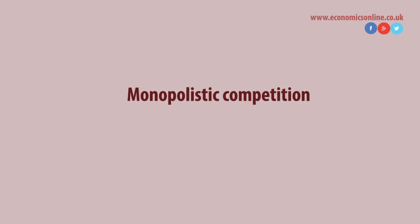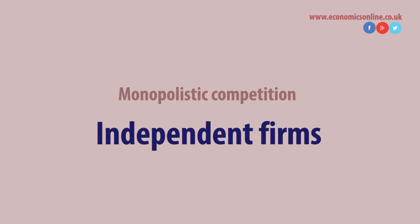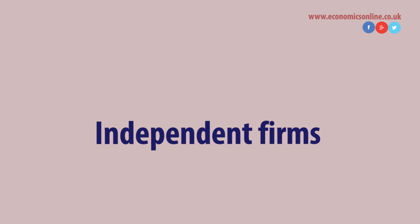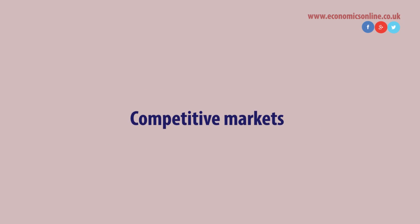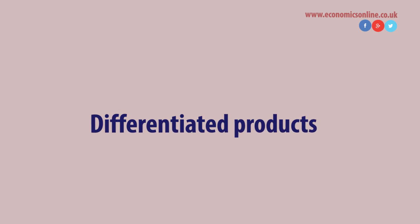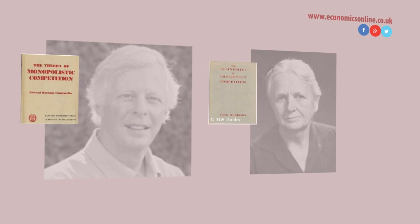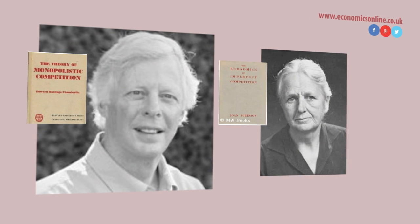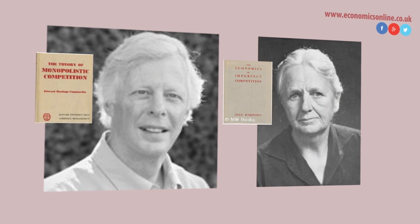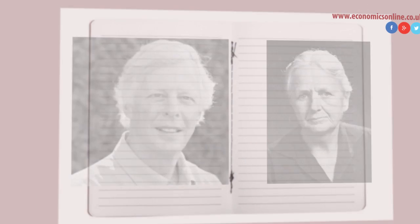Monopolistic competition is a market structure with many independent firms operating in a competitive market, where each firm sells a slightly different good or service. Monopolistic competition was first identified and discussed by American economist Edward Chamberlain and British economist Joan Robinson in the 1930s.